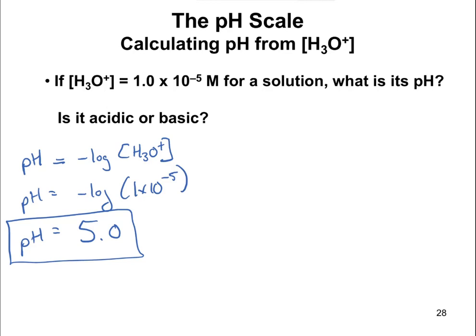So the pH is also going to be directly related to this exponent for H3O+. So whenever the coefficient is 1, whatever that exponent is, if it's negative 5, your pH is 5. If you had 1 times 10 to the negative 6 here, your pH would be 6.